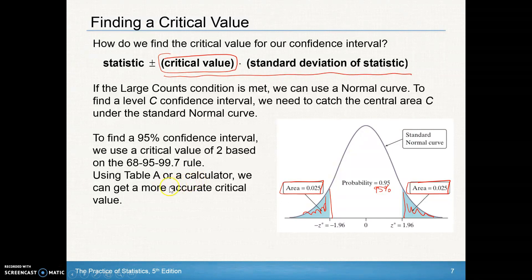If we use table A or a calculator, we get a more accurate critical value. If we use actually our table A and we look up this area, you'll actually notice that we have a Z of negative 1.96. Or if you looked up this area and looked up 0.9750, you'll see you have a Z score. We have this now called a Z star. This is on the negative side, negative Z star. That Z star is just what we're going to use for our critical value.